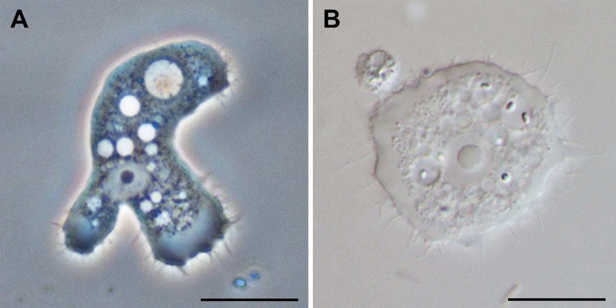Discosian amoebae lack hard shells, but some, like Cochleopodium and Korotnevella, secrete intricate organic scales which may cover the upper dorsal surface of the cell. No species have flagella or flagellated stages of life.